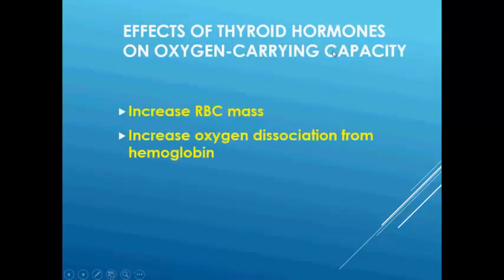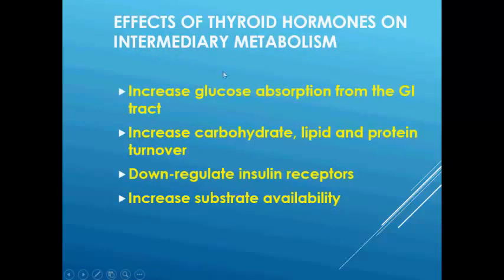Effect of thyroid hormone on oxygen carrying capacity: it increases RBC mass. Since hemoglobin is present in RBCs, if hemoglobin is more, then oxygen carrying capacity will be more. Effects of thyroid hormone on intermediary metabolism: it increases glucose absorption from the gastrointestinal tract, increases carbohydrate, lipid and protein turnover, and increases substrate availability.